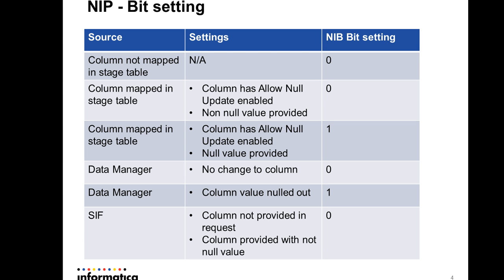If you have not mapped the column in the stage table, the corresponding NIP bit will not be calculated and will be marked as 0 by default. If you have the column mapped in the stage table with the Allow Null Update checkbox enabled, and you are not providing a null value then it is a 0, and if you are providing a null value then it is a 1.